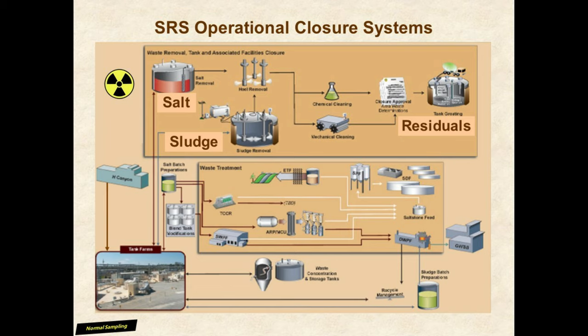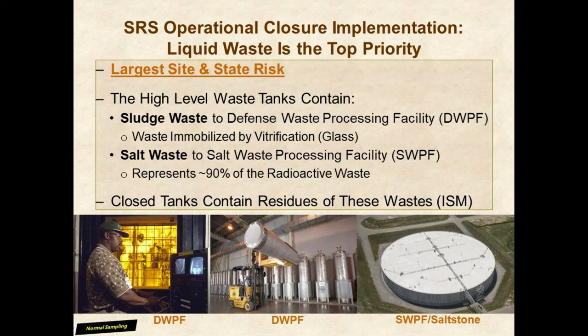This flowchart shows the magnitude of the tank closure process, with sludge, salt, and residual wastes all appearing in the top box and the support facilities appearing below. It is important to note that liquid waste is a top priority. The massive volume of radioactive waste creates the largest risk at the site, and the South Carolina Department of Health and Environmental Control, or SC DHEC, considers it the largest risk in South Carolina. The photos here show the sludge and salt waste processing as a precursor to the ISM implementation.